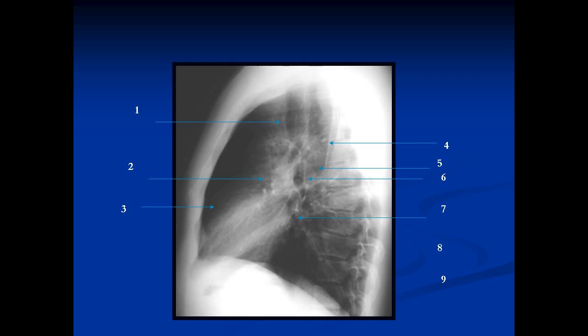The left atrium is the part of the heart that sits here, and all the pulmonary veins form a confluence that comes into the left atrium at that level. Finally, we have the left ventricle, which sits in the lower part of the chest. Now you have to look at the diaphragms. The right diaphragm is the one that goes all the way to the front. The left diaphragm comes to the front but stops at the level of the heart — the reason we don't see the anterior aspect of the left hemidiaphragm is because the heart sits on top of it and there is no air between the diaphragm and the heart.